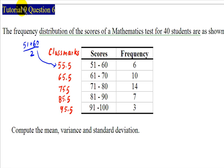Hi, in this recording I will show you how to do tutorial 9 question 6 on statistics. There are 40 test scores organized in the frequency distribution table as shown. We are going to compute the mean, the variance, and standard deviation by using the calculator. Before we use the calculator, we must compute the class mark of each class. There are 5 classes.